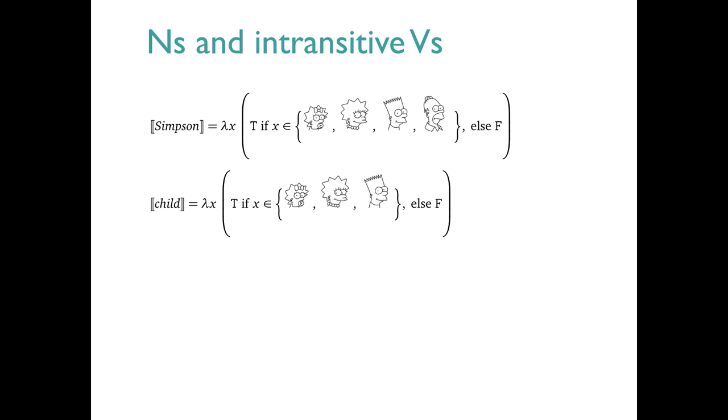Here's a couple of examples. Notice that they differ only in what set is involved. For this one, we're saying that the word Simpson denotes the function that returns true for Maggie, Lisa, Bart, and Homer, and false for all other entities. By the correspondence between characteristic sets and characteristic functions discussed in the last screencast, we can see that this is equivalent semantically to saying that Simpson denotes the set of all Simpsons.